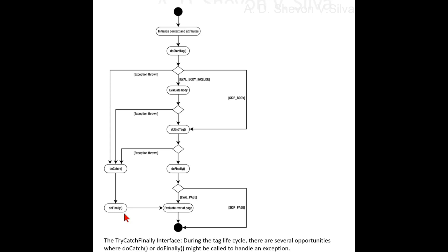With this in mind, let's now take a look at how you can deploy this resilient tag and make it available for use in the easiest possible way. You can refer to the documentation for more information. The int doStartTag processes the start tag for this instance — this method is invoked by the JSP page implementation object. The int doEndTag processes the end tag for this instance — this method is also invoked by the JSP page implementation object on all tag handlers.